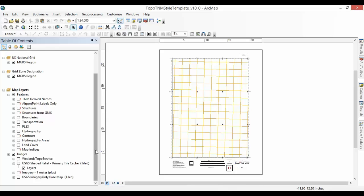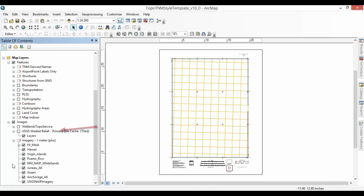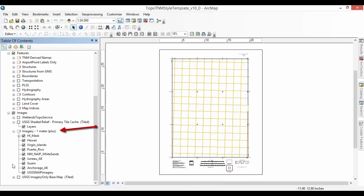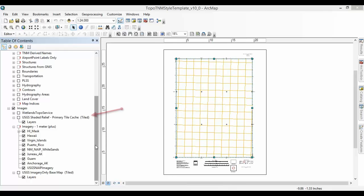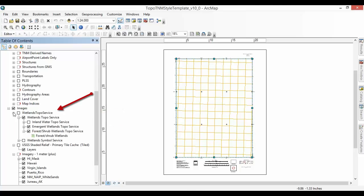The web map service layers in the style template includes ortho imagery. Please note that the imagery 1 meter is a dynamic web service for scales larger than 1 to 18,000, and the USGS imagery only base map is a cached web service for scales smaller than 1 to 18,000. Shaded relief services produced by the USGS and a national wetlands inventory web map service produced by the US Fish and Wildlife Service are also included.